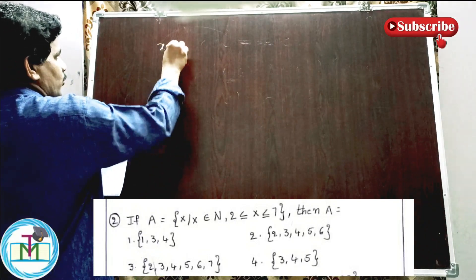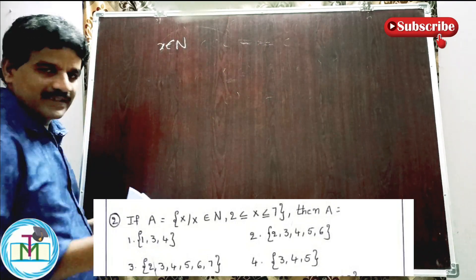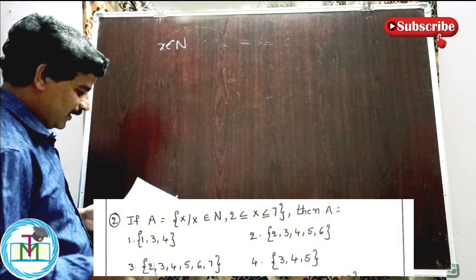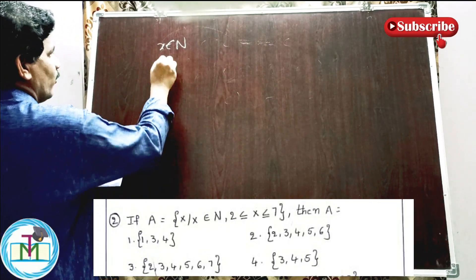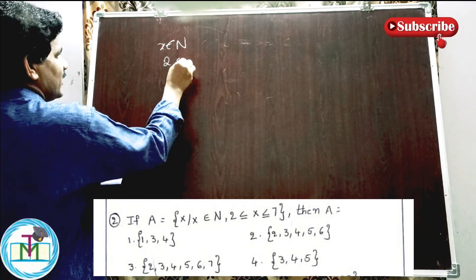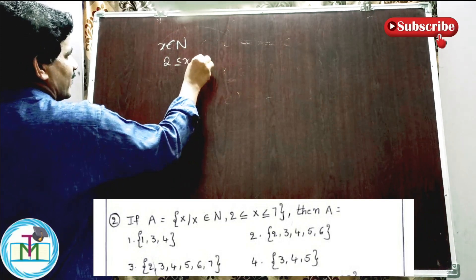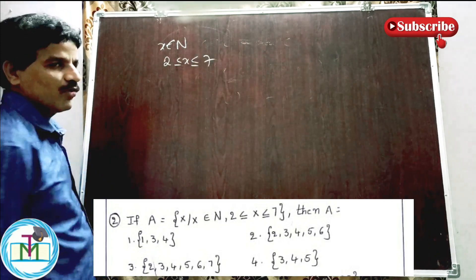So x belongs to N, x is a natural number. It lies between 2 less than or equal to x less than or equal to 7.